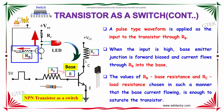This is the collector. When the input is high, the base emitter is forward biased and the current flows through RB into the base. The values of RB, the base resistance, and RC, the load resistance, are chosen in a manner that the base current flowing is enough to saturate the transistor.